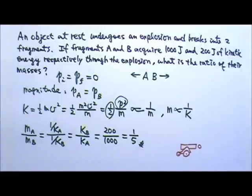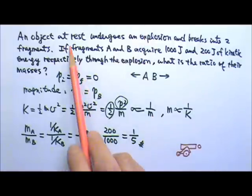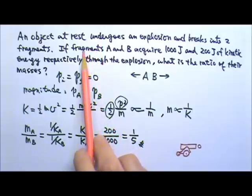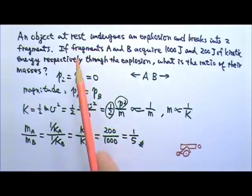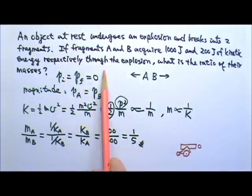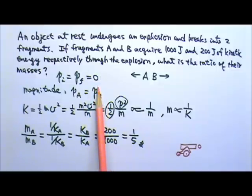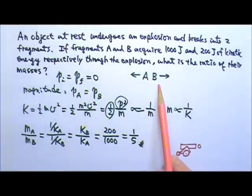For mass and kinetic energy to be inversely related, the two fragments must have equal momentum. In problems like this, the explosion must start with the object at rest so the total momentum is zero.